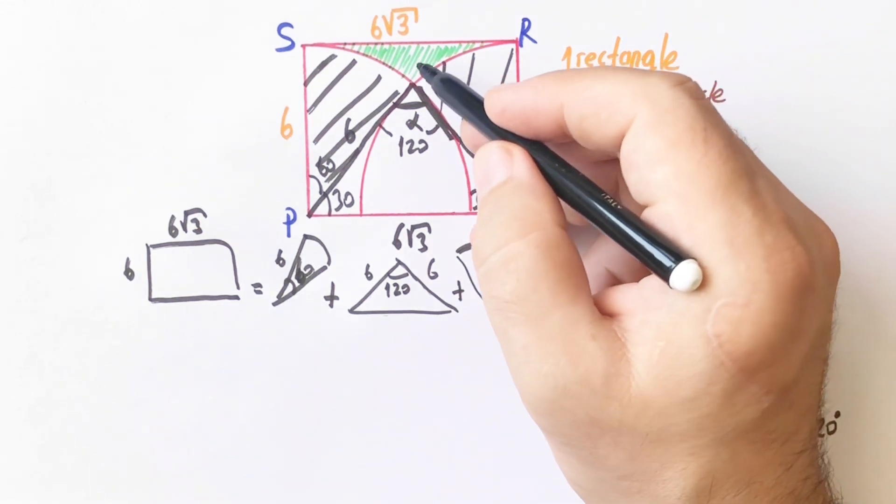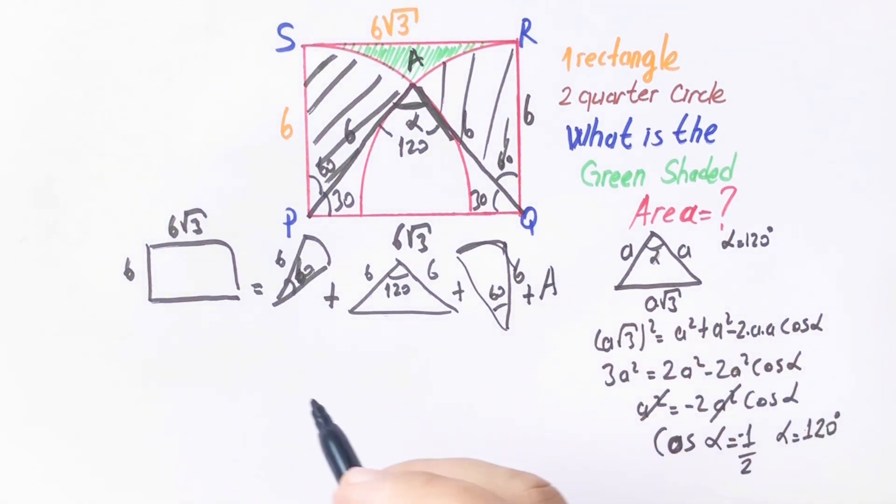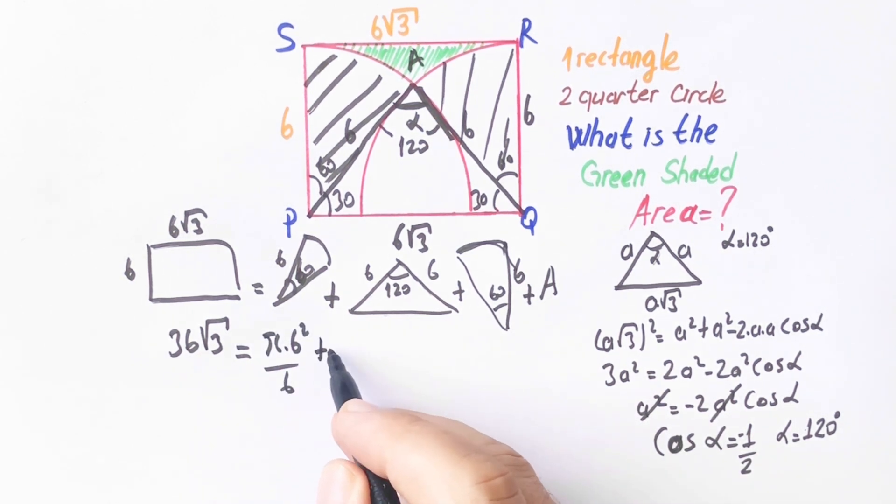Let's call here A in square. 36 root 3 equals pi times 6 squared over 6, plus 6 times 6 over 2 times sine 120.